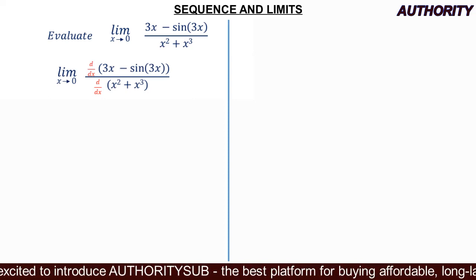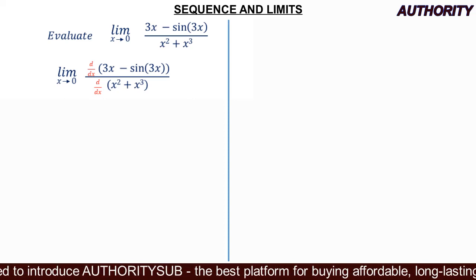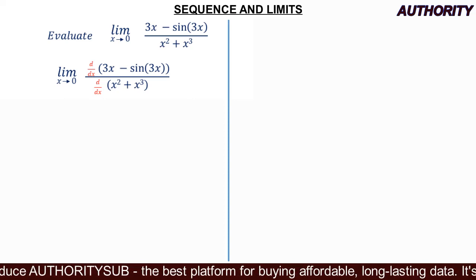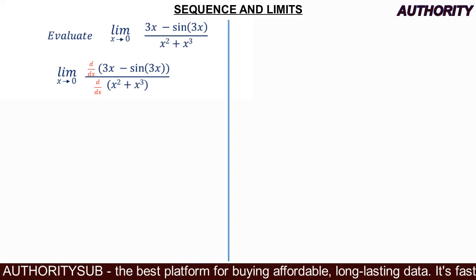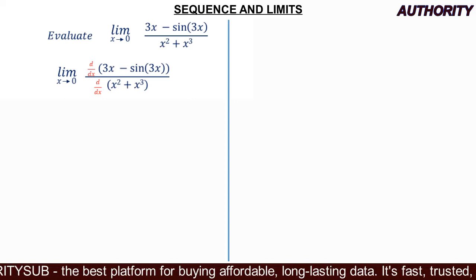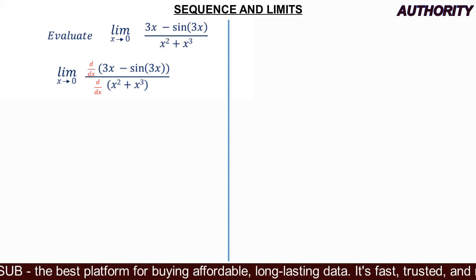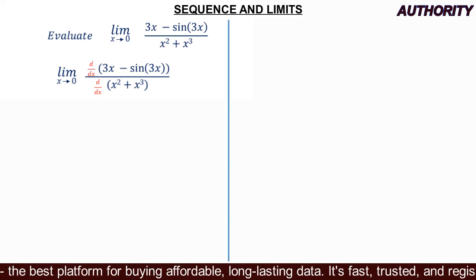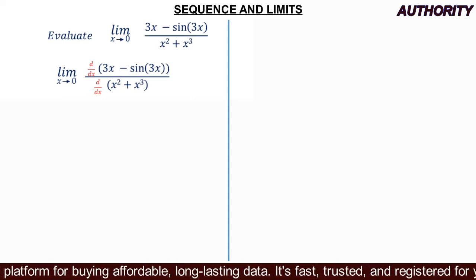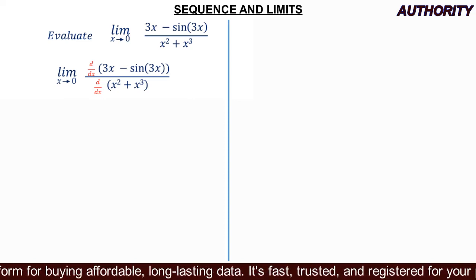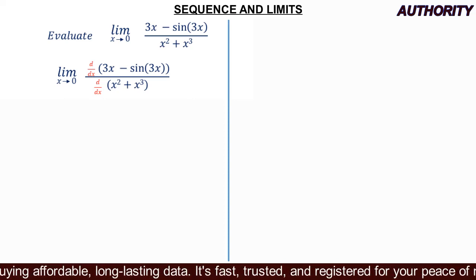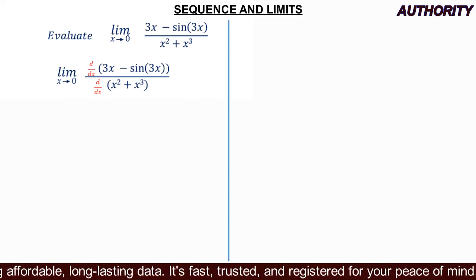So we are going to have the limit as x approaches 0 of the derivative of the numerator all over the derivative of the denominator — that is d/dx of (3x minus sine 3x) all over d/dx of (x squared plus x cubed).